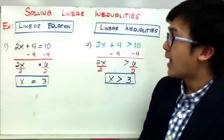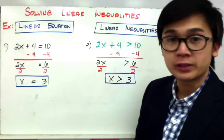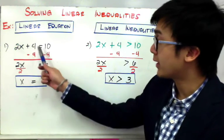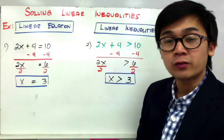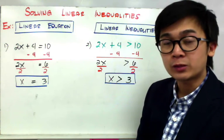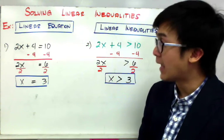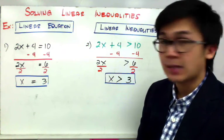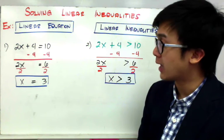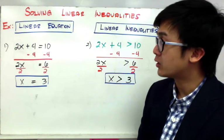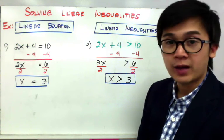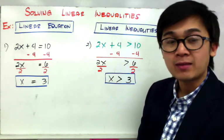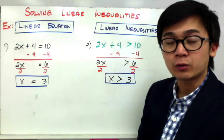Let's say I have 2x plus 4 equal to 10, which is a linear equation because of the equal sign. If we're going to solve for x, we need two steps to get x by itself. The first step is to subtract 4 on both sides, giving us 2x equal to 6. Then dividing by 2 gives us x equal to 3. That is for a linear equation.